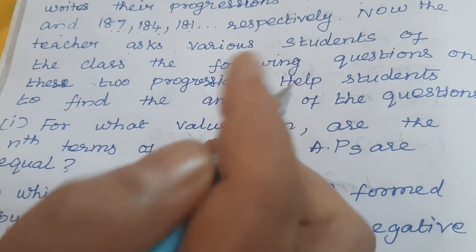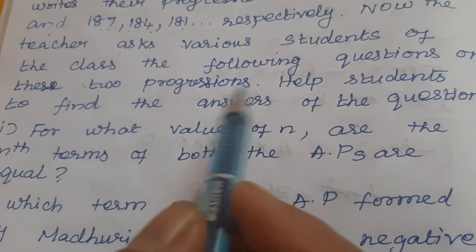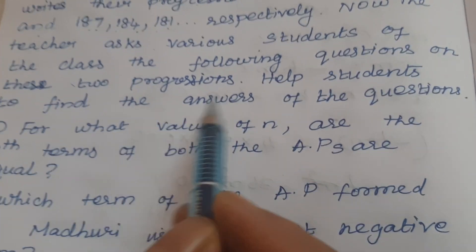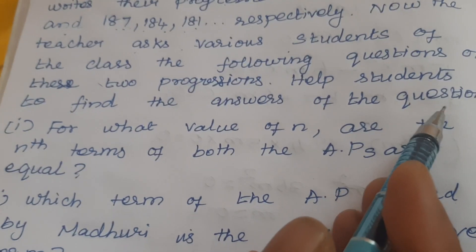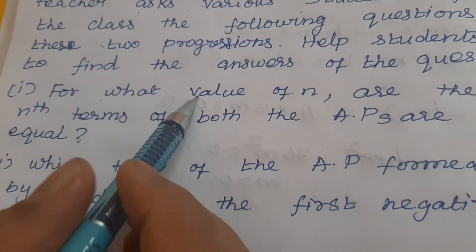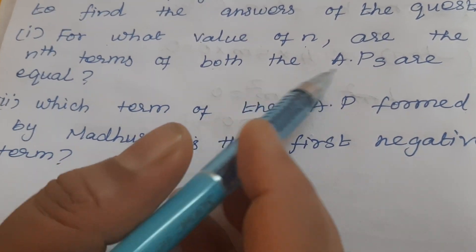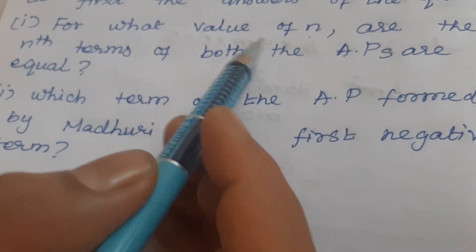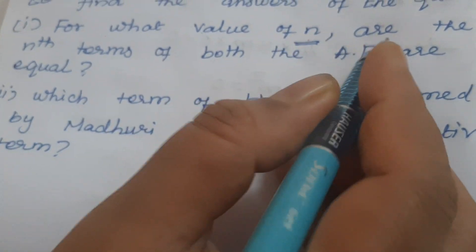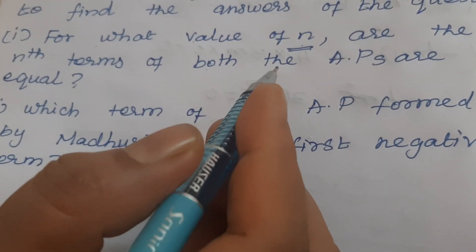So now the teacher asks the question. The first question is: for what value of N are the Nth terms of both the APs equal?